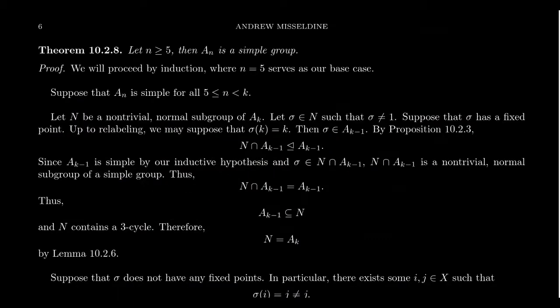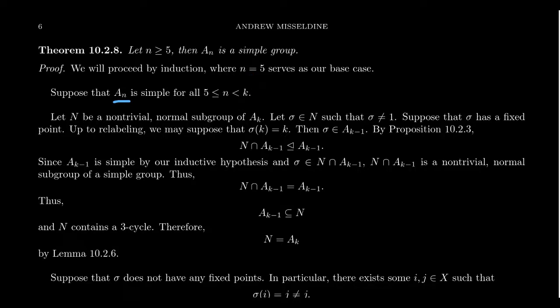For larger Aₙ with n ≥ 5, we proceed by induction, where the A₅ case is our base case. The induction hypothesis: suppose we've proven that A₅ through Aₖ₋₁ are all simple groups. Let N be a non-trivial normal subgroup of Aₖ, and let sigma be a non-trivial element in N. Our goal is to find a 3-cycle inside N, which would force N = Aₖ.